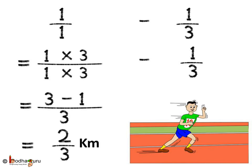To make both the denominators the same, that is to get like fractions, we write one by one as one into three divided by one into three, which is three by three. So, three by three minus one by three is equal to two by three. So, Aman ran two by three kilometers more on Tuesday as compared to Wednesday.